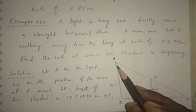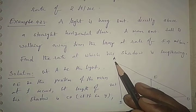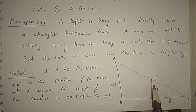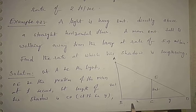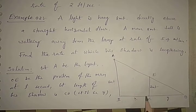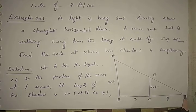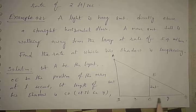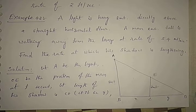Let us assume AB is a street light. The length of the street light is 8 meters as given in the question. EC is the position of the man, and the height of the man is 2 meters. Let the distance between B and C be X, meaning the distance between the base of the street light and the person. Assume the length of the shadow is Y, so the distance between C and D is Y.